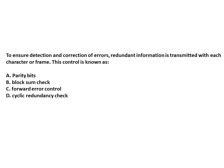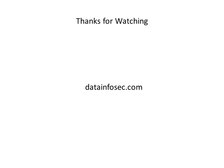Final question: to ensure detection and correction of errors, redundant information is transmitted with each character or frame — this control is known as? Notice the word 'correction' in the question, so our answer should be forward error control, as it helps us to correct the error as well. Thanks for watching — please visit datainfosec.com for more such videos.